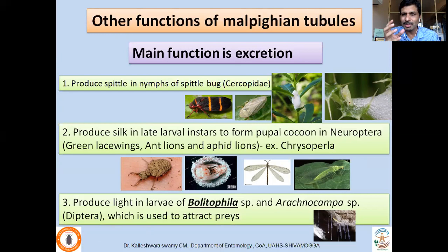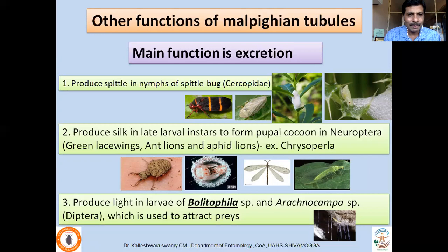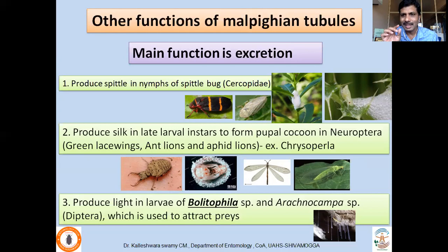Note that in larval Lepidoptera, silk or cocoon is produced by the labial glands (modified salivary glands), not Malpighian tubules — that is the difference between Neuropteran and Lepidopteran pupae. In some insects like Bolitophila or Arachnocampa, which we discussed in relation to bioluminescence, the maggots produce light via the Malpighian tubules — unlike well-known insects like fireflies where photogenic organs are at the 6th or 7th abdominal segment.